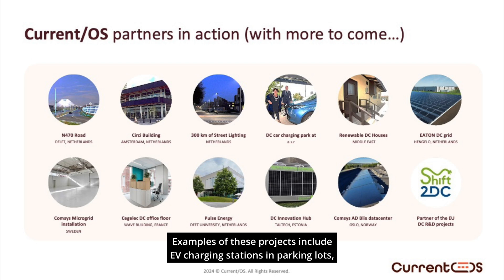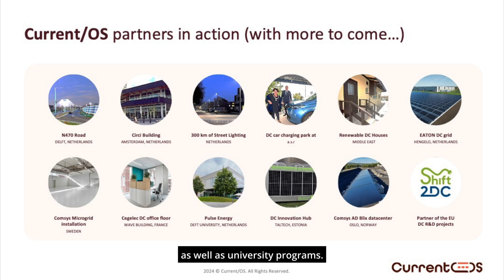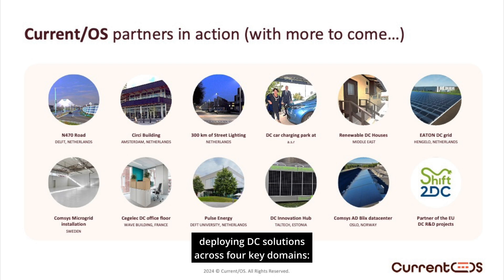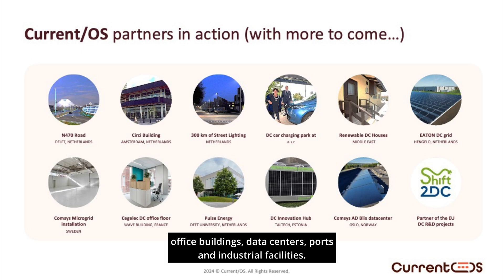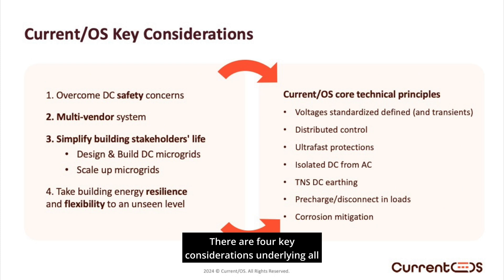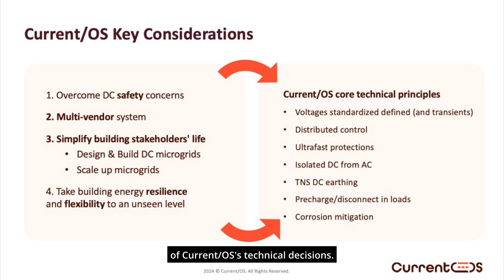Examples of these projects include EV charging stations and parking lots, office buildings, housing estates, data centers, street lighting, as well as university programs. Current OS is also an associated partner in Shift2DC, an 11 million-plus European Union-funded program deploying DC solutions across four key domains: office buildings, data centers, ports, and industrial facilities.